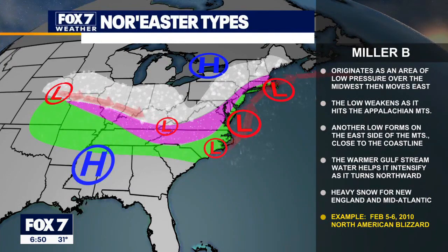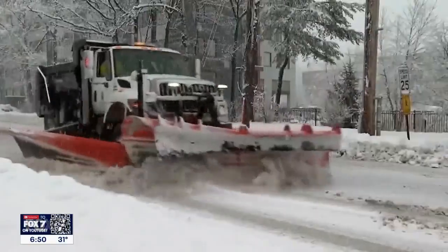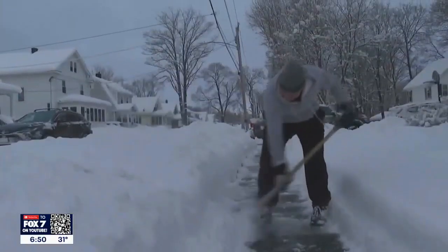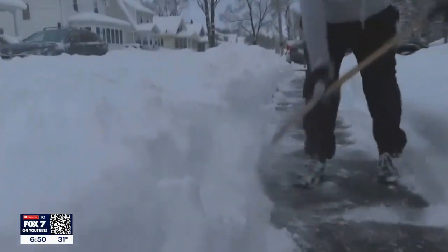An example is the North American blizzard of February 2010, which resulted in two to three feet of snow. Last year we didn't see any significant snow-producing nor'easters, but it looks like this year things could be busy. By the way, nor'easters can happen any time of the year but tend to peak from September to April. This was 'Did You Know' with Attlee Rowe.